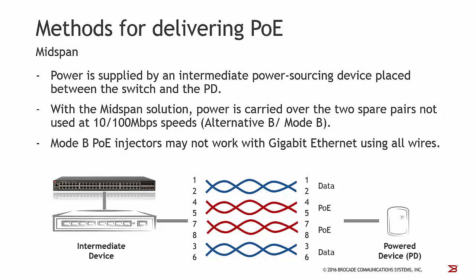There are basically two methods for delivering PoE. With Midspan, power is supplied by an intermediate power sourcing device placed between the switch and the powered device itself. With a Midspan solution, power is carried over two spare pairs which are not used by data connections, basically resulting from 100 megabit connections where only 4 out of 8 wires are used for data transmission. This is also called Alternative B or Mode B.